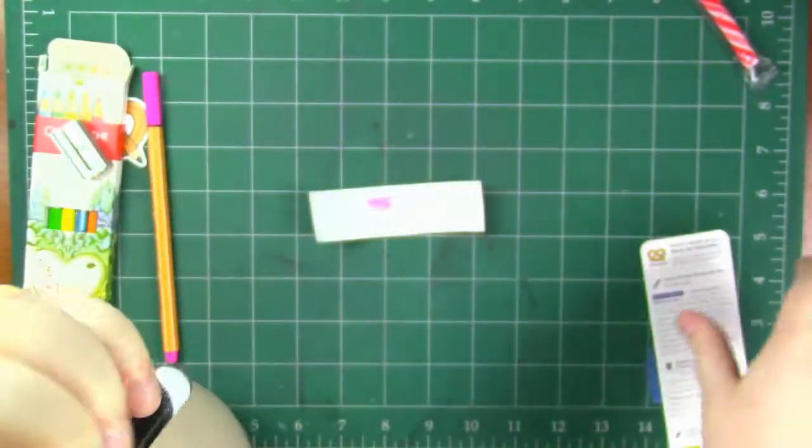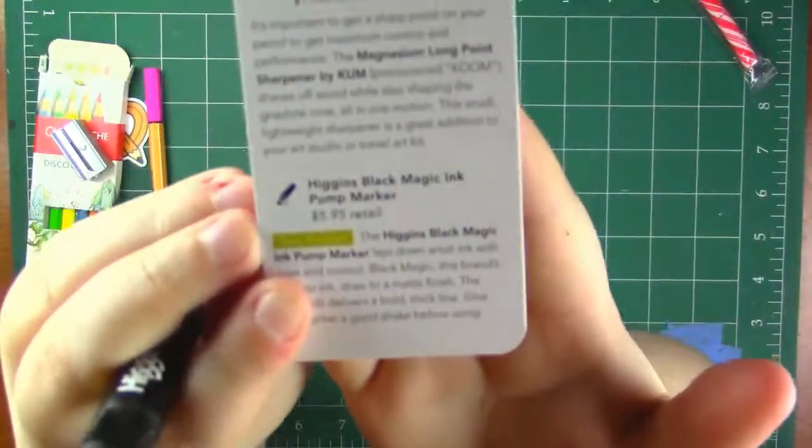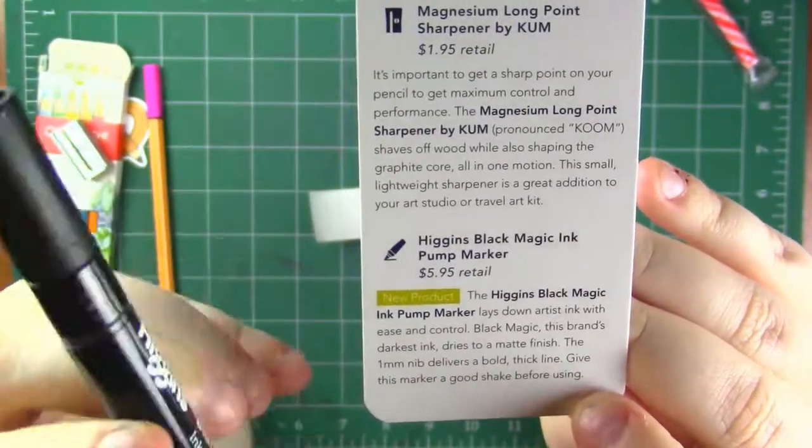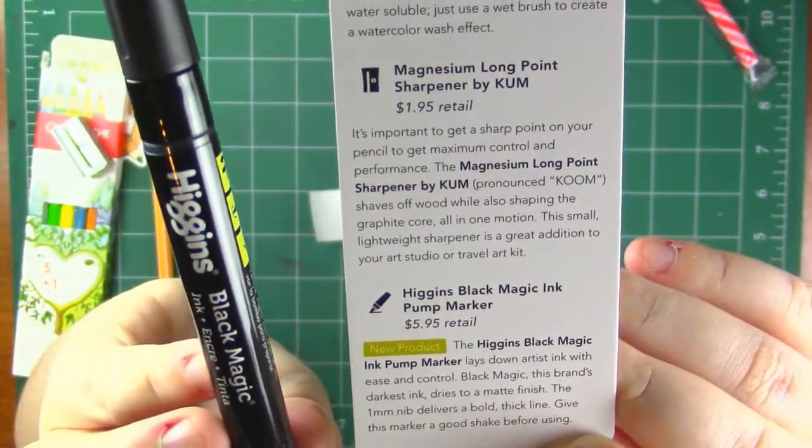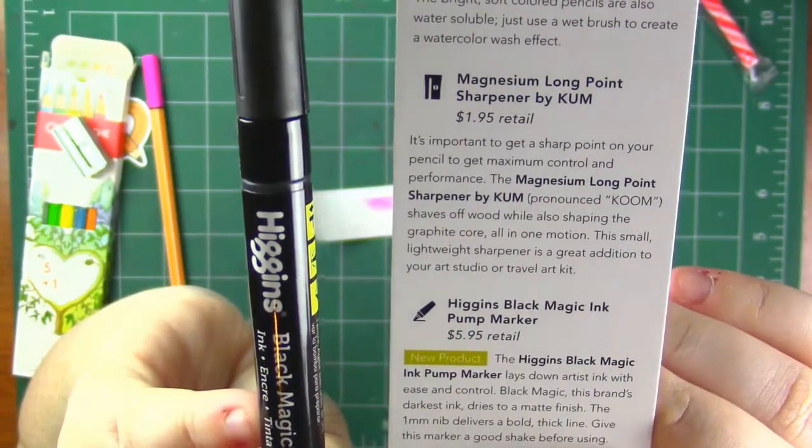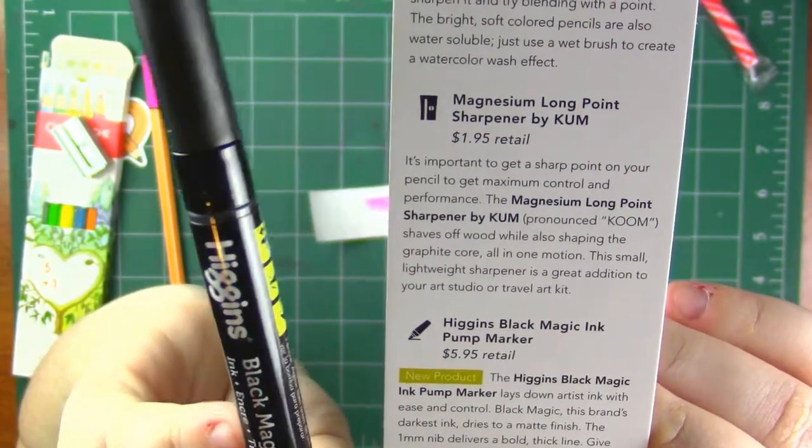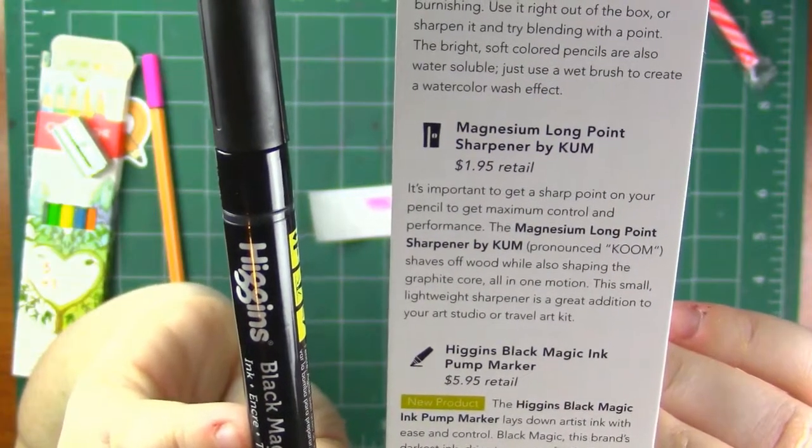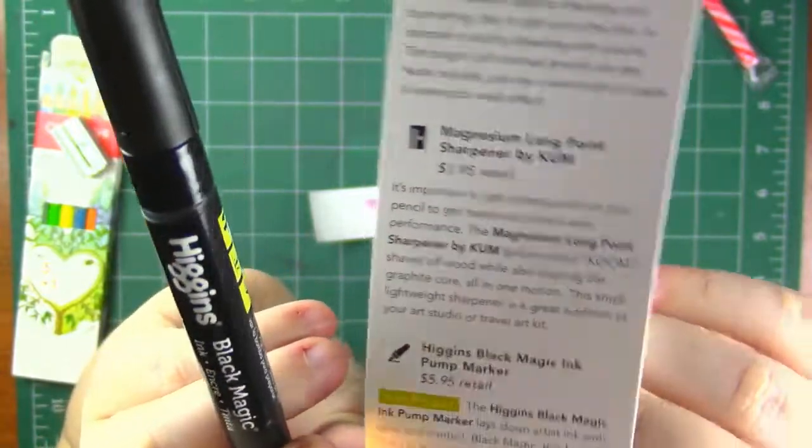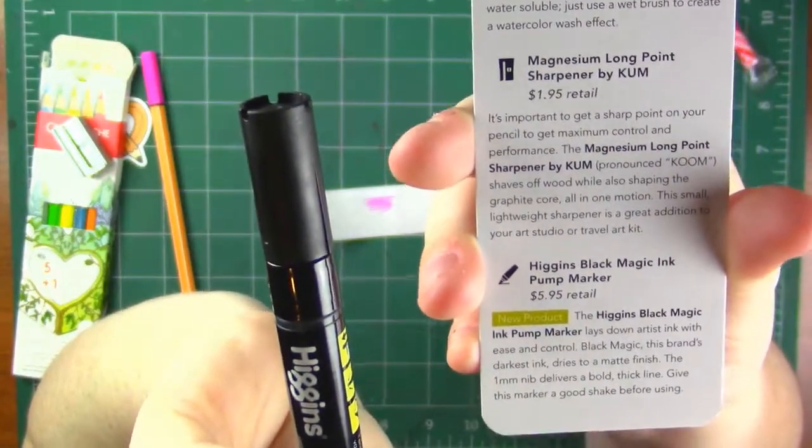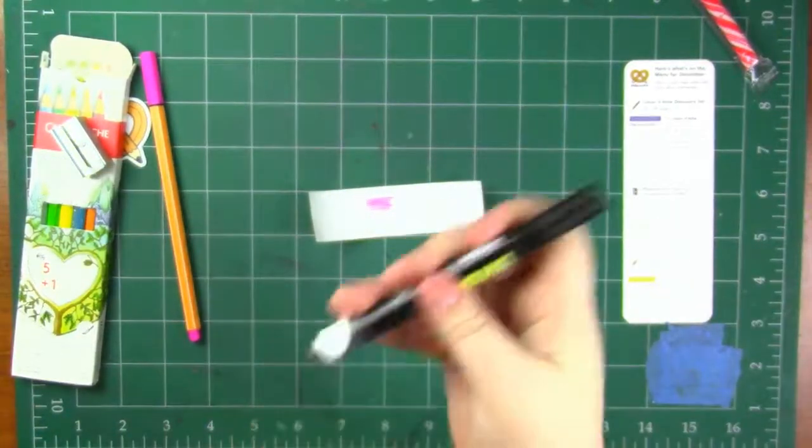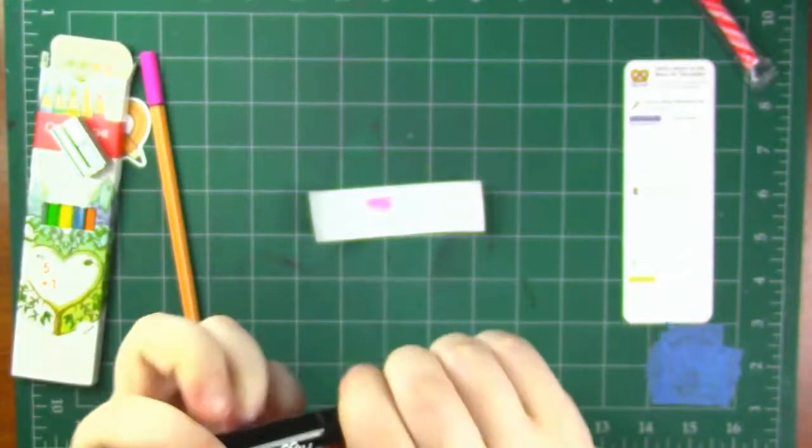This is really cool. So the card says that this is obviously the Higgins Black Magic ink pump marker. This is a $5.95 retail. So this is a new product, no wonder I've never heard of it. The Higgins Black Magic ink pump marker lays down artist ink with ease and control. Black Magic, this brand's darkest ink, dries to a matte finish. The 1mm nib delivers a bold thick line. Give this marker a good shake before using. Will do. So let's get this working real quick.